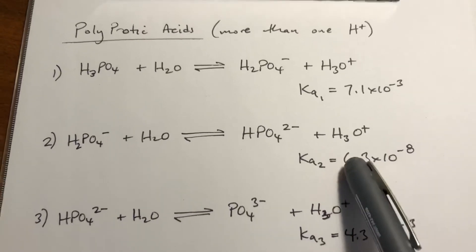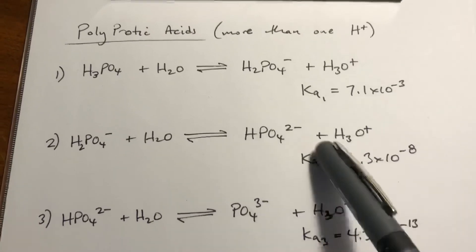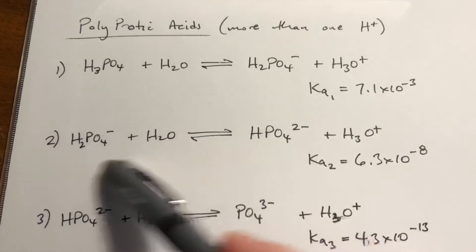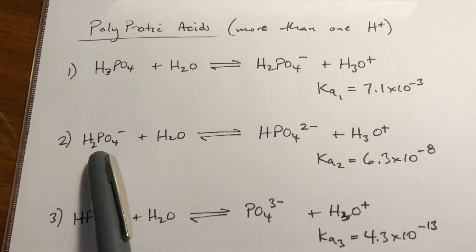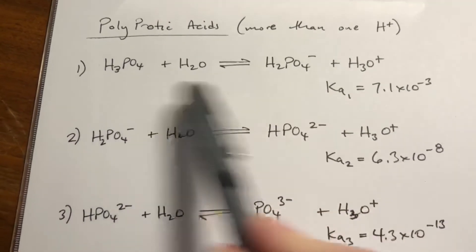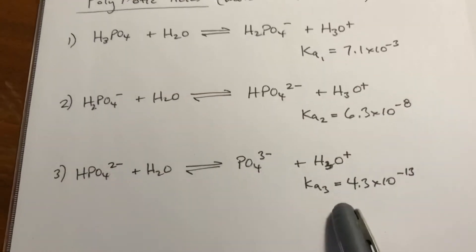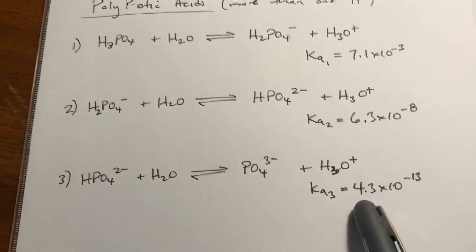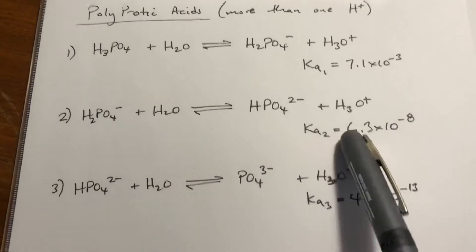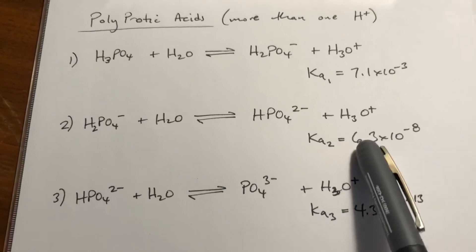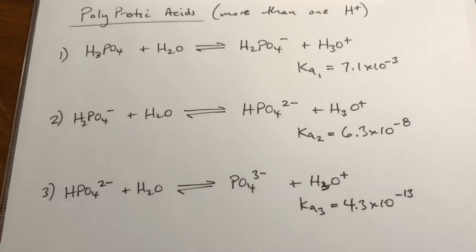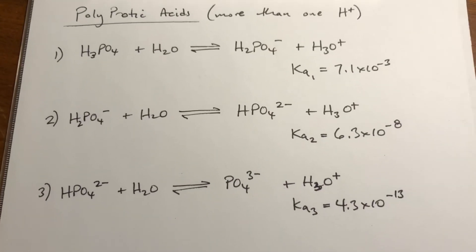And this is such a small value that this reaction is more likely to go backwards. And every time you produce one of these, Le Chatelier's principle is going to push this reaction backwards, which stops it from going to the next step. This reaction at the bottom is 10,000 times less likely to happen than this one, and this one's 10,000 times less likely to happen than this one. So in reality, even though it has three protons...